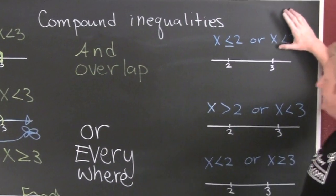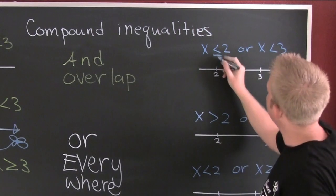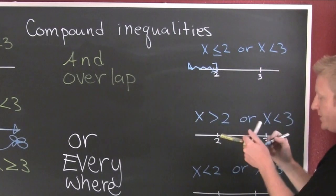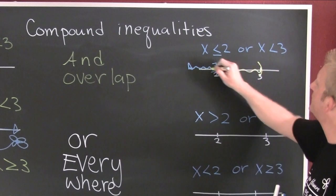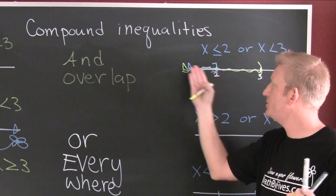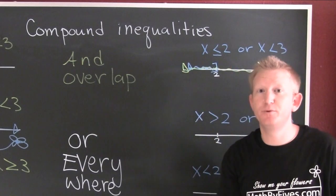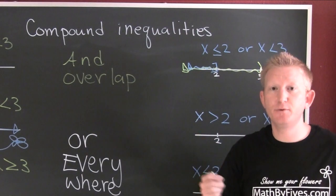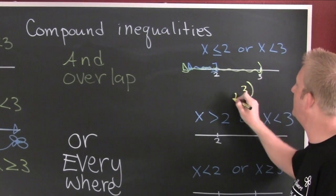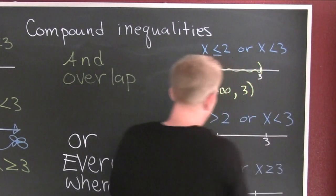In the OR case, I'm looking for wherever it's shaded and that's what I'm gonna write down. On the two, looks like I'm going to include it with a square bracket and I'm shading to the left. On the three, it appears I'm not going to include it, and I'm shading left. Since this is the OR case, I could write both intervals, but that would be redundant. So I'll write from minus infinity all the way to three, because that's where it's shaded.